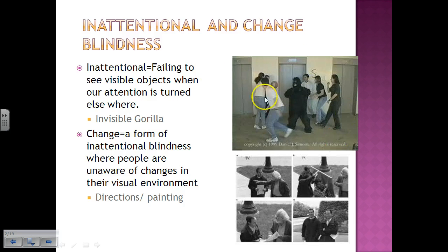The definition of inattentional blindness is failing to see visible objects when our attention is turned elsewhere. You can see in this picture a gorilla. This is a very famous experiment called the invisible gorilla experiment where people in the screen will be doing some action like throwing a ball, and a gorilla will actually walk through the middle of the screen and then walk out. While that's going on, because you're so focused on the people throwing the ball, you fail to see this gorilla that's just walked through.